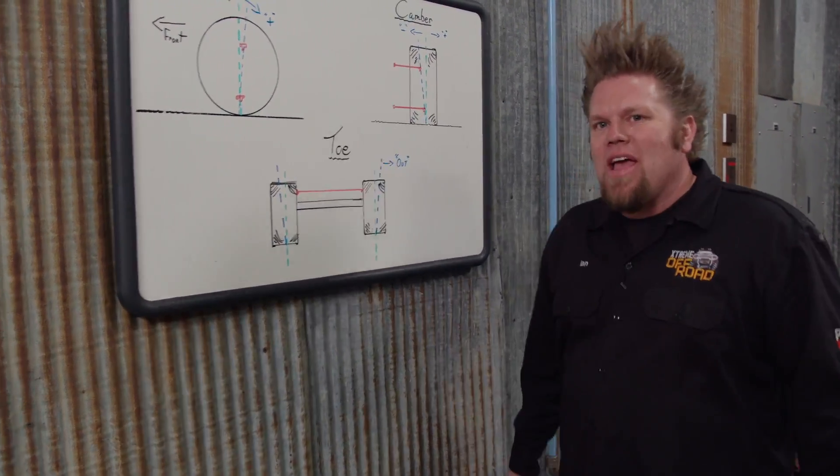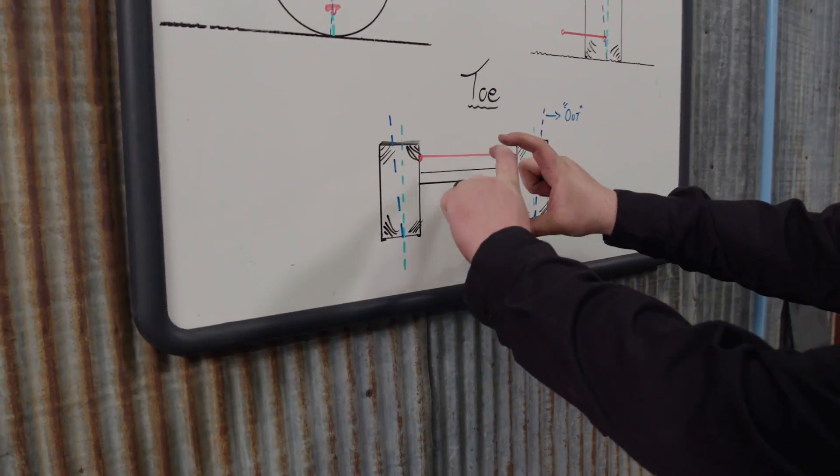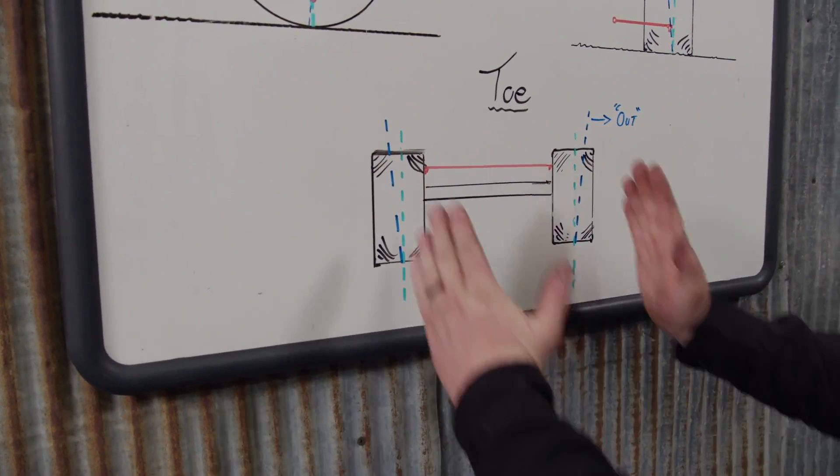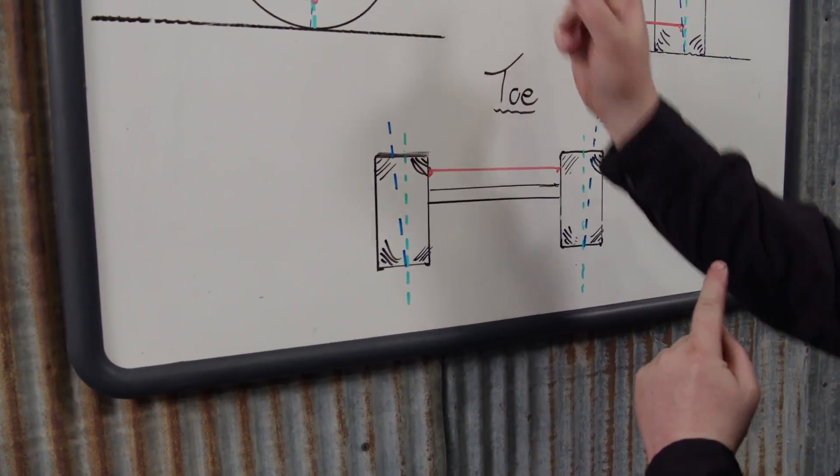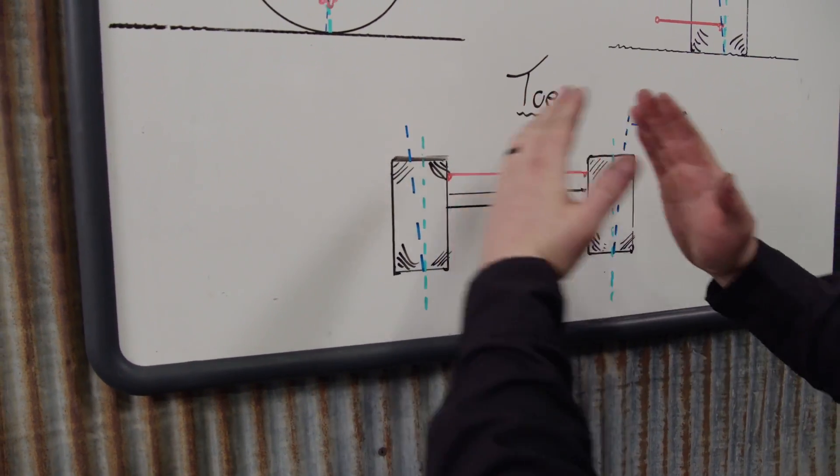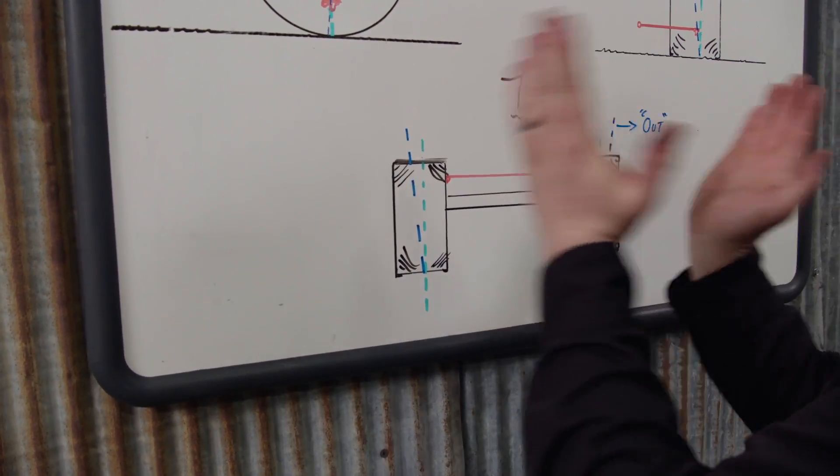The last alignment angle is toe. At this point, we're looking at the vehicle from the top, and these are our two tires. This is the front. If the tires are pointed towards each other, they're toed in. If they're pointed out, they're toed out.